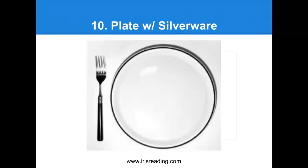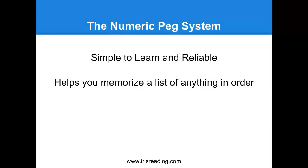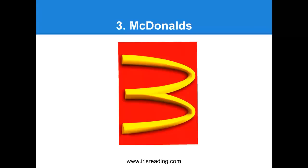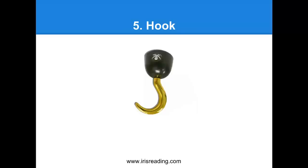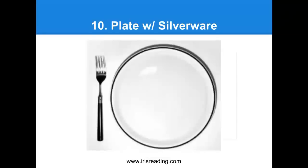I want to make sure you have these down. I'm going to switch off from the visuals — six through ten: six was what? What did seven look like? What did eight look like? What did nine look like? And what does ten look like? A quick full review: one is a pencil, two is a swan, three is McDonald's, four is a chair, five is a hook, six is a cherry, seven is lightning, eight is a racetrack, nine is a balloon, and ten is a plate and silverware.